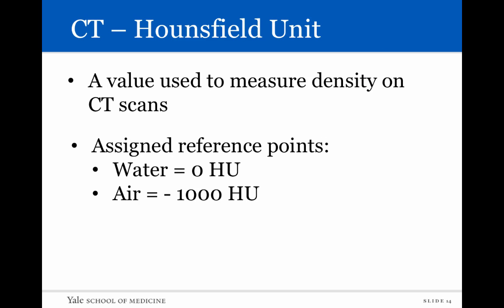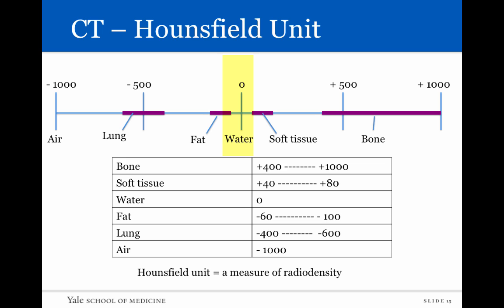The Hounsfield unit is a value used to measure density on CT scans — it is a unit of radio density. Hounsfield arbitrarily assigned water a Hounsfield unit of zero and air a Hounsfield unit of minus 1,000, with all different densities in between having different values. Looking at the table: water is at zero, air at minus 1,000, bone goes up to about 1,000, fat is from minus 60 to minus 100, lung is from minus 400 to minus 600, and soft tissue and blood are from 40 to 80. The higher the Hounsfield unit, the brighter it appears on CT — bones are white, soft tissues are gray, water is a little less gray, fat is dark, and air is absolutely black.